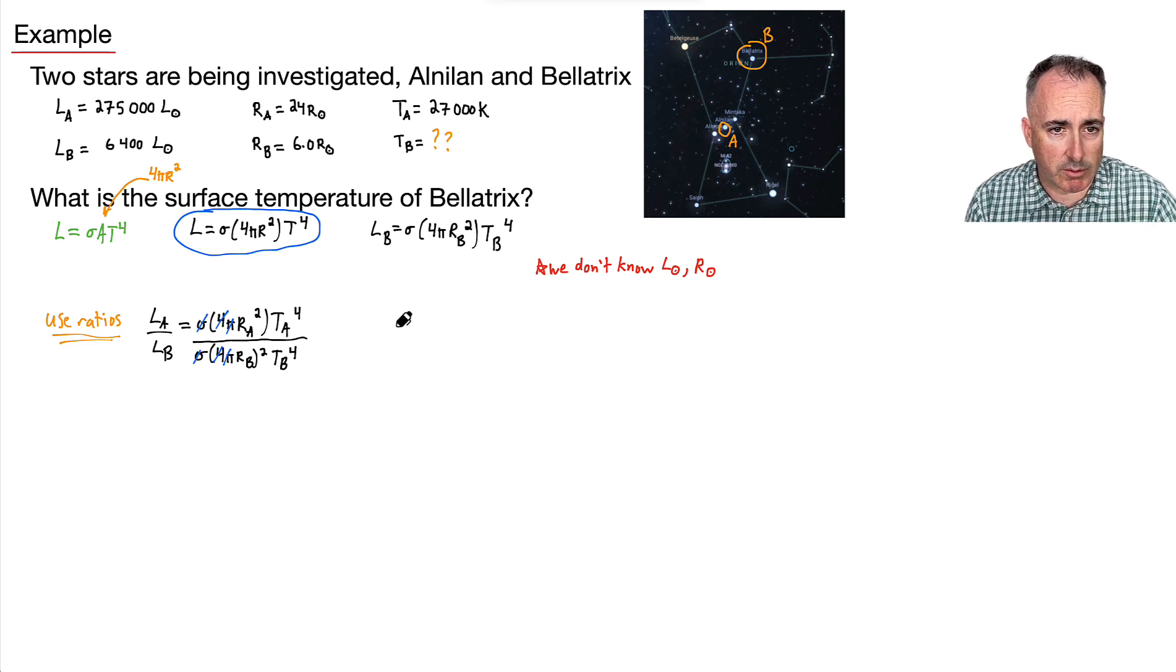Okay, so now I'm left with, I'm just going to rewrite it, so that I've got LA over LB is equal to, let's see. I've got RA squared. Remember what RA is. RA is 24 times R of the sun. And I've got to square that.